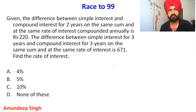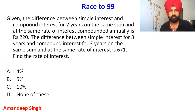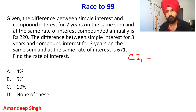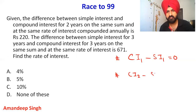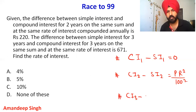This question is very easy if you know the formula for the difference between simple interest and compound interest for two years and three years. The compound interest and simple interest for one year — the gap is zero. For two years, the gap is given by PR² upon 100². For three years, the gap is given by PR³ upon 100³ plus 3PR² upon 100².